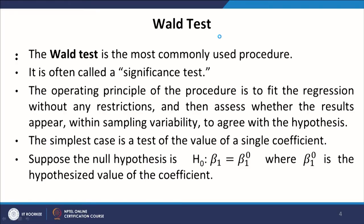The Wald test is the most commonly used procedure, though most of us might not be using the term Wald test. Why this is so I will be discussing more in the next module when we introduce other tests. It is also called significance test. The operating principle of the procedure is to fit the regression without any restrictions and then assess whether the results appear within sampling variability to agree with the hypothesis. One very important characteristic of the Wald test is that, though it is the most commonly used test, it is not designed to incorporate any restriction in any kind of regression.